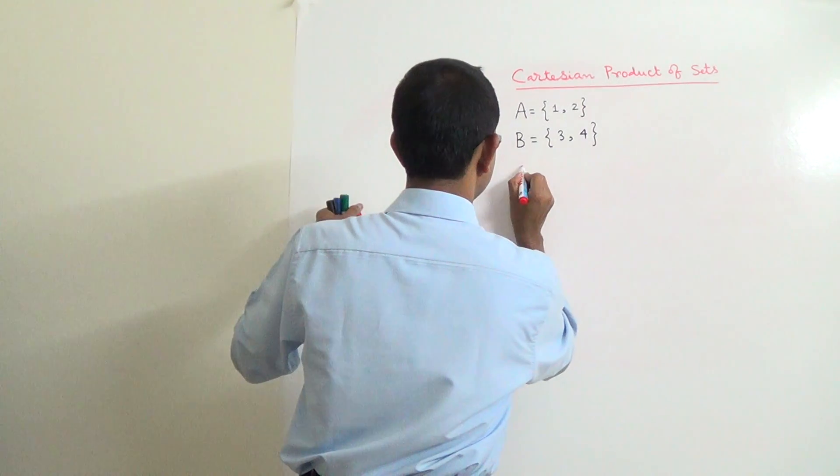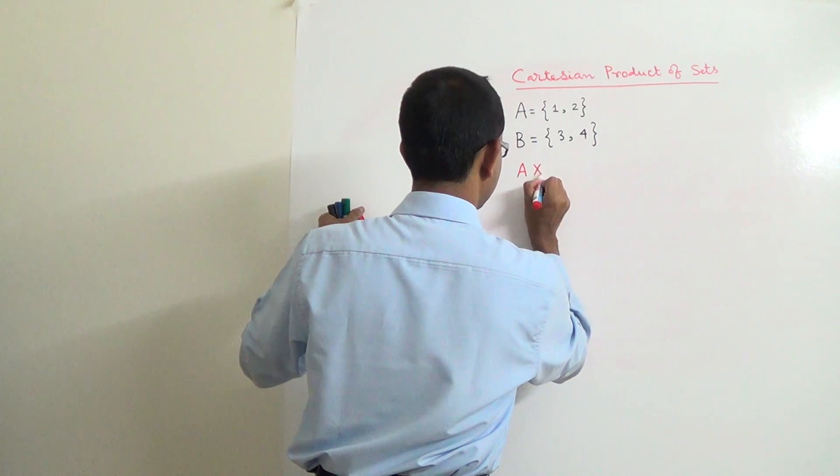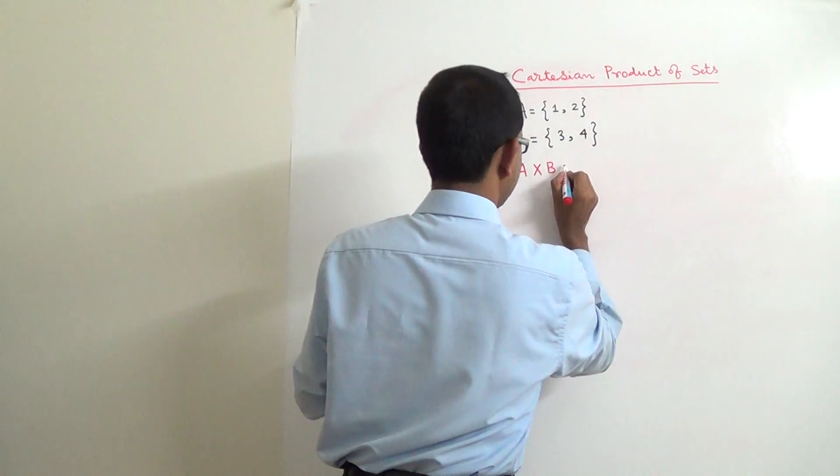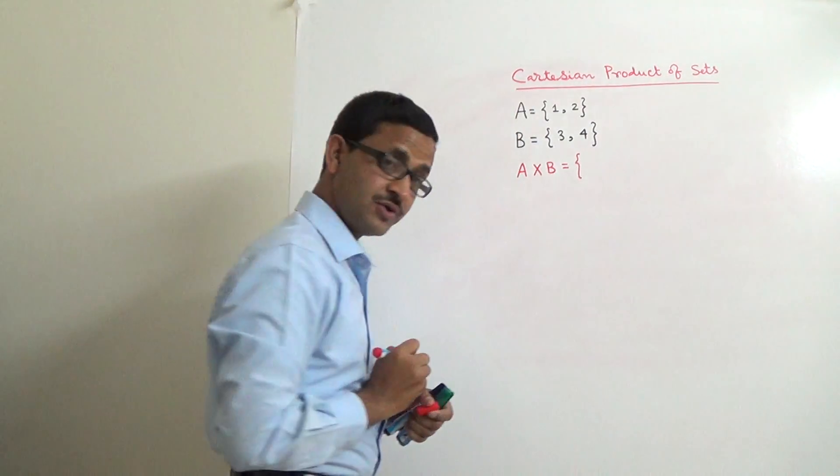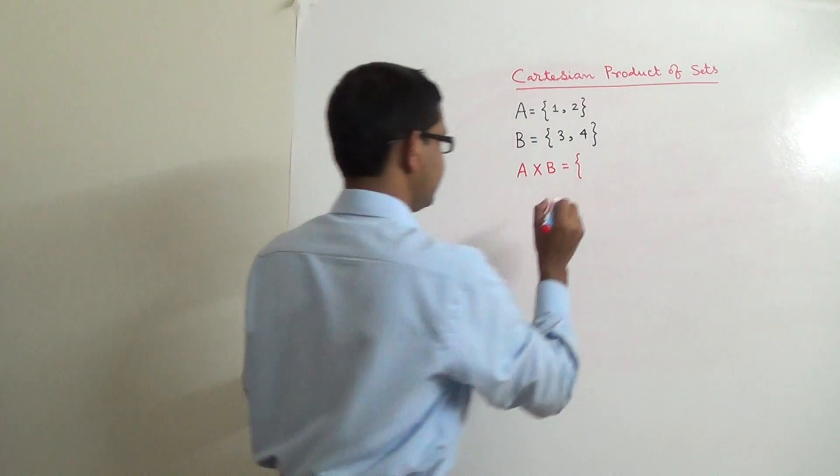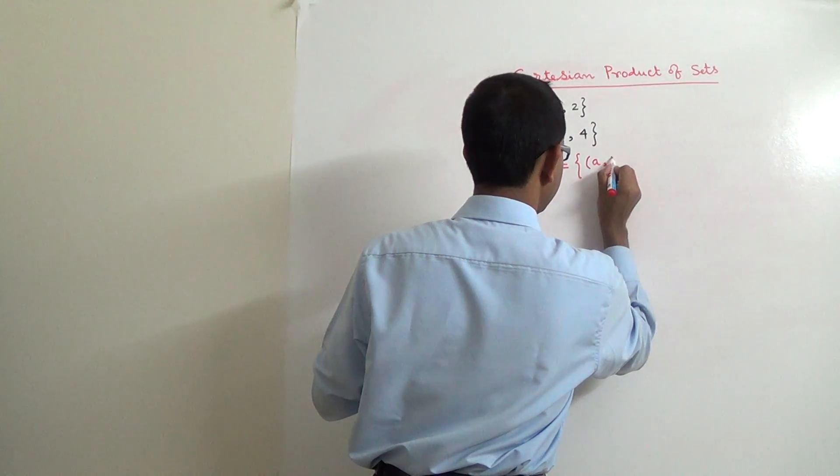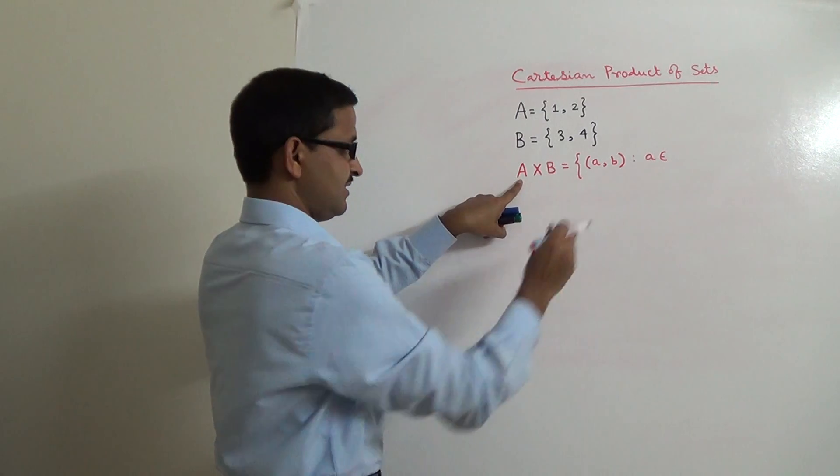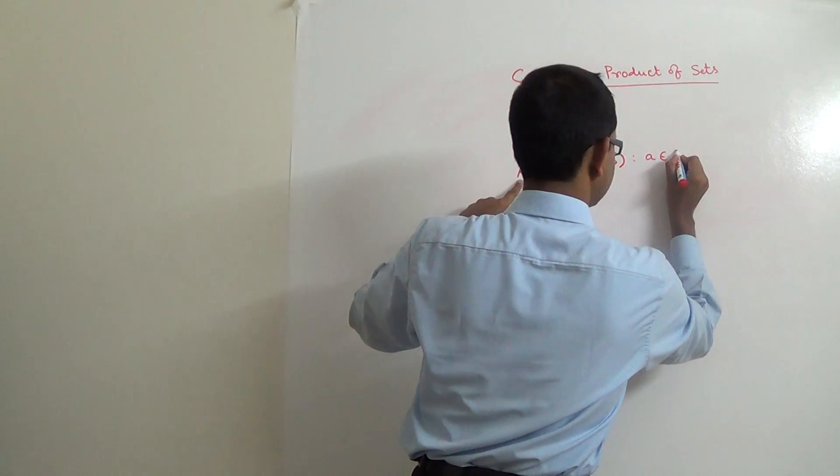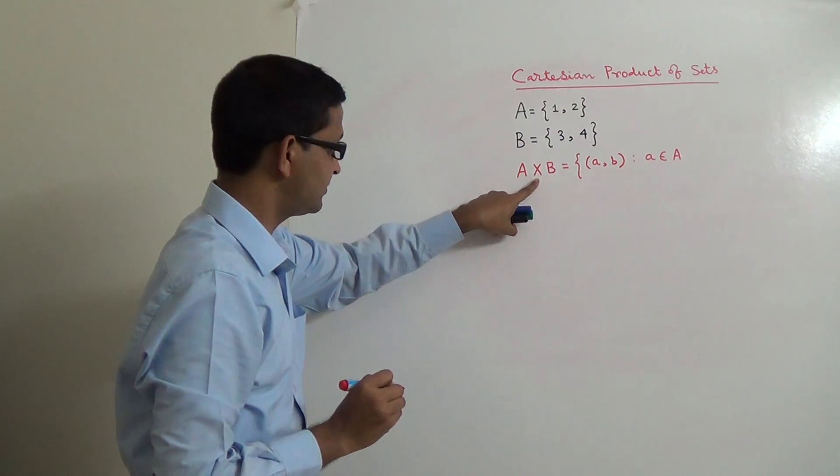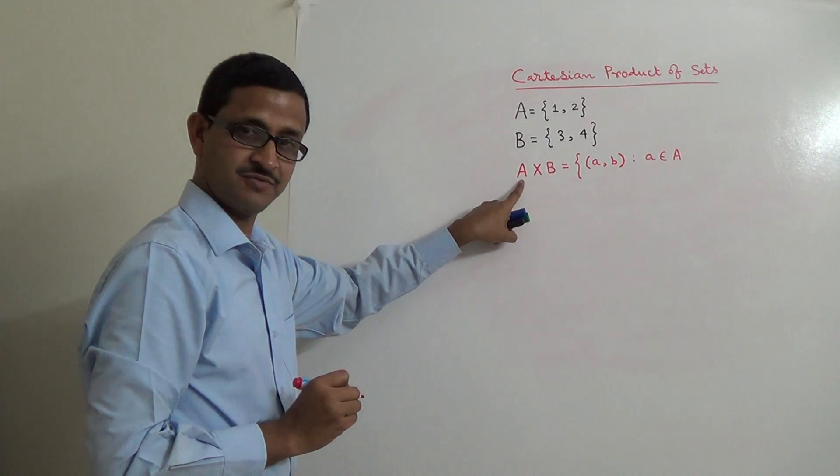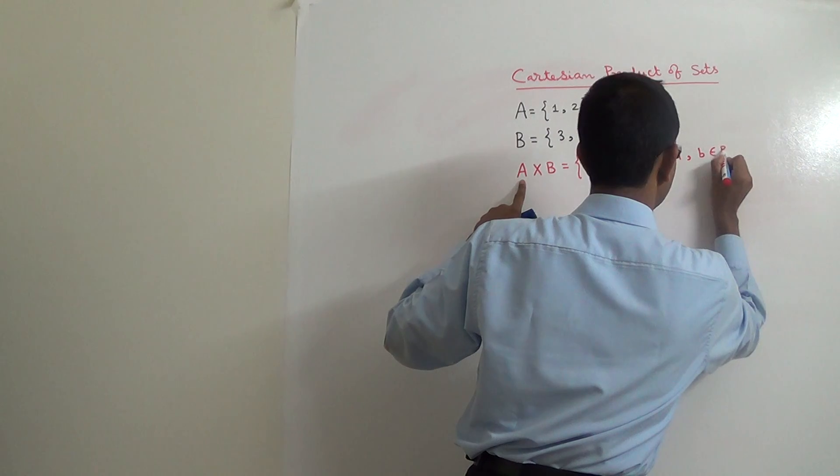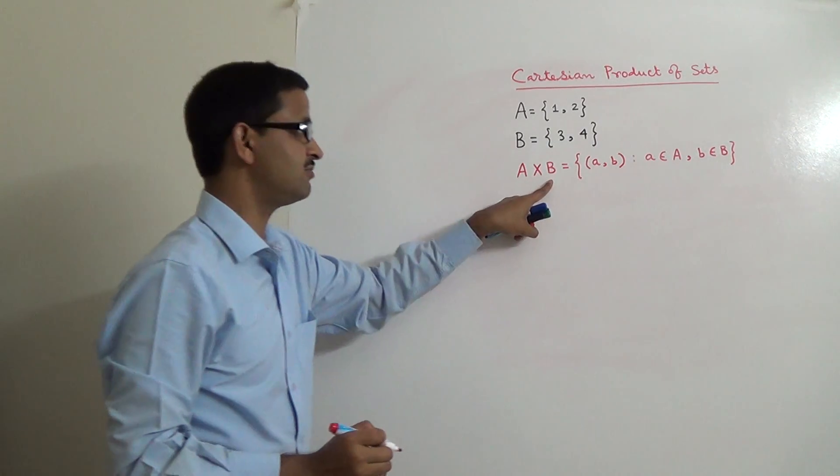If I write the Cartesian product of A and B it is denoted by A cross B. Cross is the symbol for Cartesian product. Its theoretical definition is like this: it contains the ordered pair (a,b) such that a belongs to the first set. First set means what? Which is left of that cross symbol.